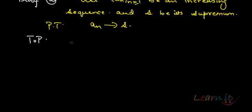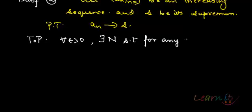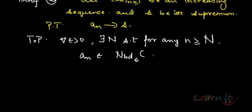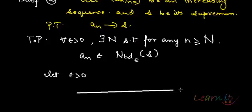What do we actually have to prove? By definition, for any epsilon greater than zero, there should exist some capital N such that for any n greater than or equal to capital N, a_n should lie in the epsilon neighborhood of S. So let us take an arbitrary epsilon greater than zero.